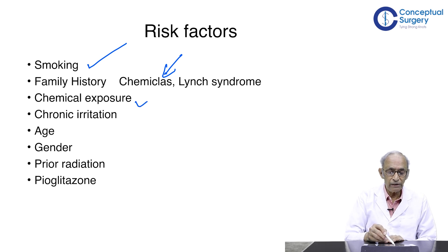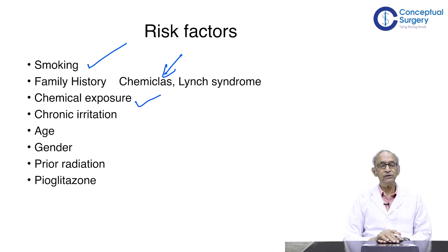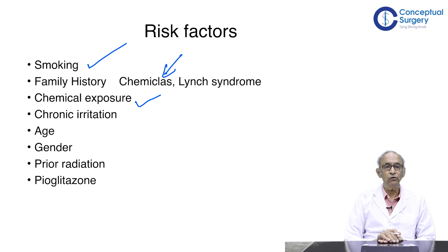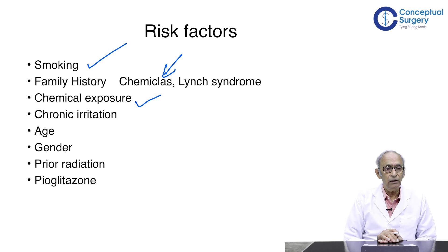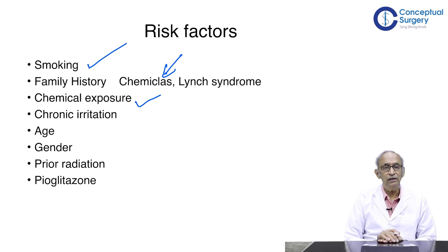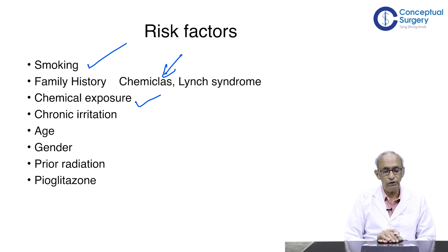Chemical exposure — particularly aniline dyes — was the first of the chemicals found to be incriminating. People who work in dye manufacturing industries, printing presses, and such other industries are at risk. Constant exposure to these chemicals, discharged in urine and acting on the urothelium, is carcinogenic in nature.